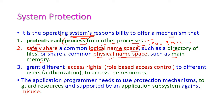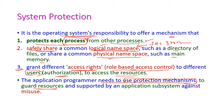The third important goal is access rights — to provide access rights to all users. That is role-based access control to different users, by providing authorization to access the resources. Hence the application programmer needs to use protection mechanisms to guard the system resources and support application subsystems against misuse. This is called protection.